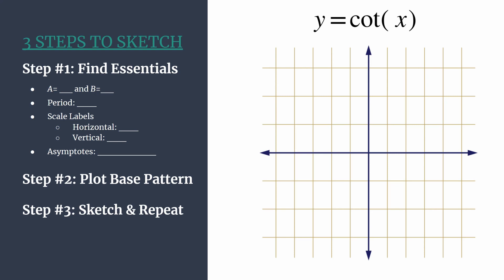I'll post videos of some more complex work examples soon. So step one we know is to find the essentials. We need to identify a and b first. Remember a is just the leading coefficient. Here it's an understood one. And that's going to help us with what I like to call our curve setting points. B is the coefficient in front of x, another understood one here.